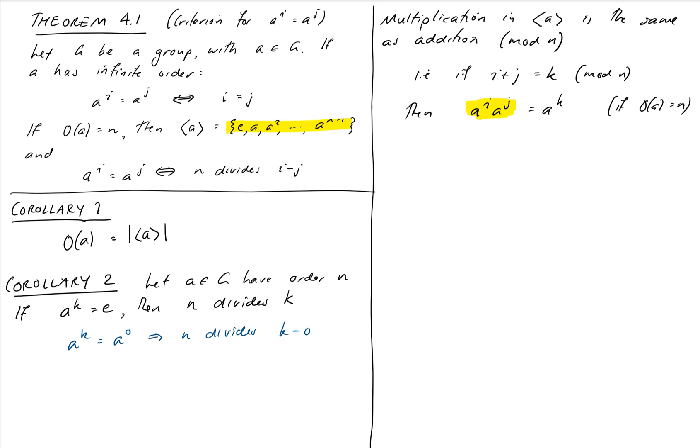And the last thing we'll note, same thing applies for an infinite group. If a has infinite order, then it behaves just like the integers. a to the i times a to the j equals a to the i plus j, just like addition in Z.